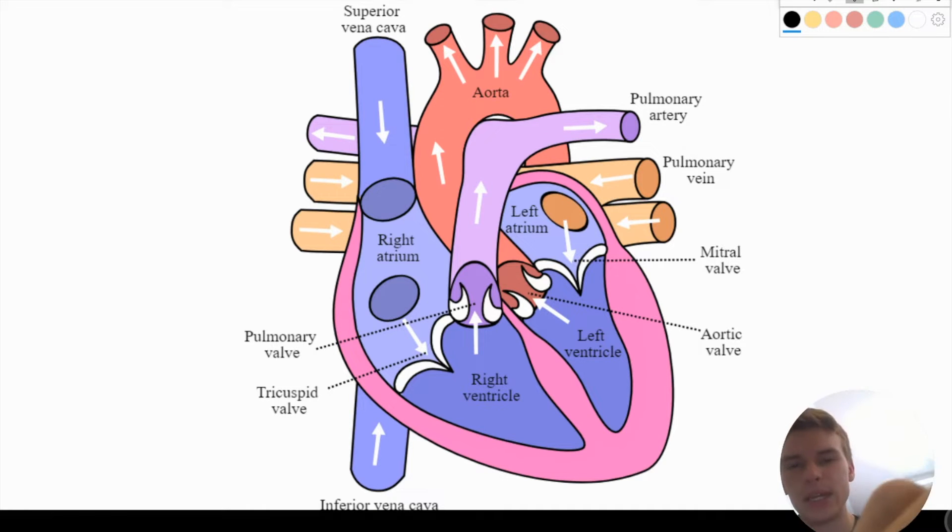Blood comes into the heart through the vena cava. We've got an inferior and a superior vena cava. And the first place they come to is our right atrium. We've got two atriums, one on the right and one on the left. Whenever blood comes into the heart, it comes into an atrium. Whenever it goes out of the heart, it goes out through a ventricle.